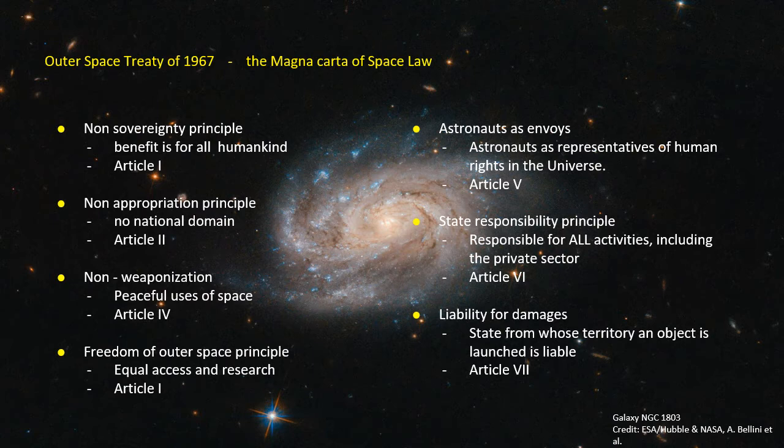Therefore, states shall render astronauts all possible assistance in the event of an accident, distress, or emergency landing on the territory of another state party or on the high seas. This provision was further expanded upon in the Rescue Agreement of 1968, which we will discuss later.